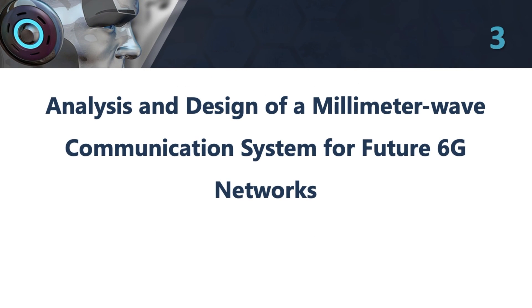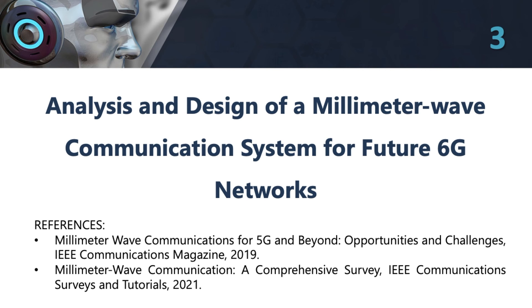3. Analysis and Design of a Millimeter Wave Communication System for Future 6G Networks. This topic involves exploring the use of millimeter wave communication systems for future 6G networks. The project could involve analyzing the advantages and challenges of using millimeter wave frequencies for communication and designing a system that can operate in this frequency range. The project could also involve developing new signal processing and antenna design techniques to optimize the performance of the communication system.